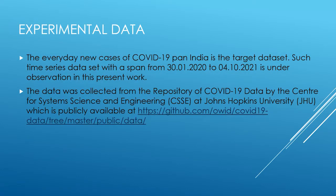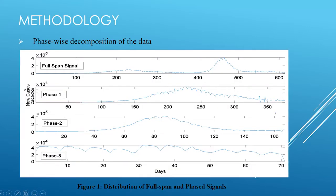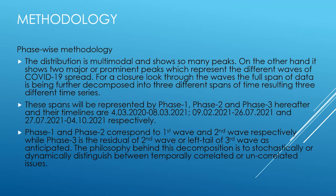The experimental data used here was collected from the repository of the COVID-19 data center for System Science and Engineering at Johns Hopkins University, which is publicly available. Here is the phase-wise decomposition of the collected data. The full span signal is further subdivided into three phases: phase one and phase two correspond to the first and second waves in India, while phase three corresponds to the remainder of the second wave and the full third wave.